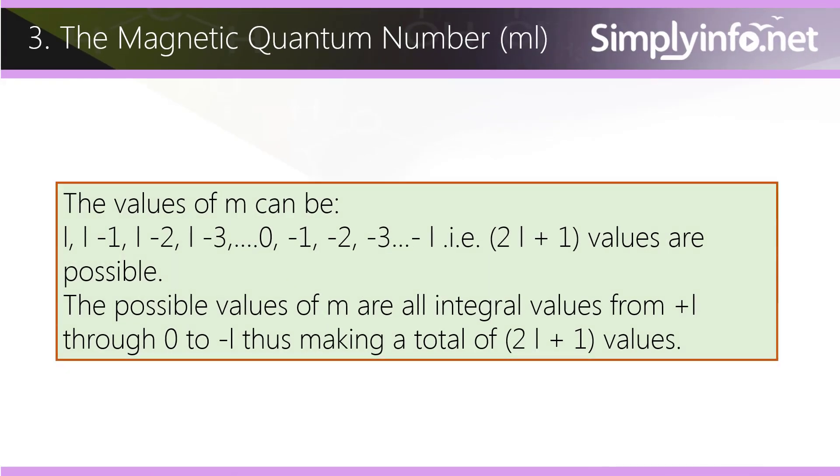The values of m can be l, l minus 1, l minus 2, l minus 3, 0, minus 1, minus 2, minus 3, minus l. That is, 2l plus 1 values are possible. The possible values of m are all integral values from plus l through 0 to minus l, thus making a total of 2l plus 1 values.